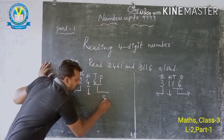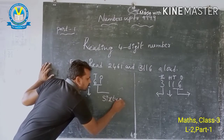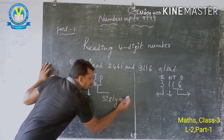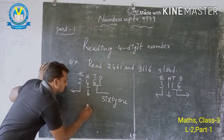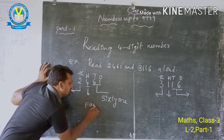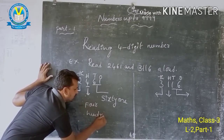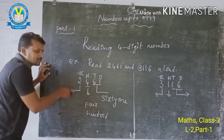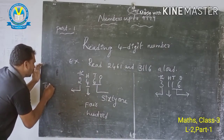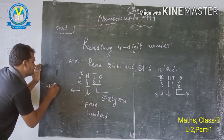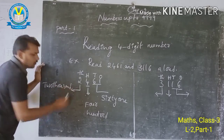Read together: the ones and tens make 61. The hundreds place is 4, so 400. The thousands place is 2, so 2,000.